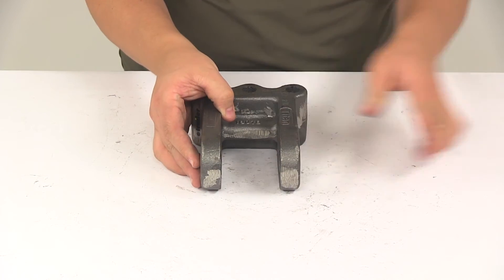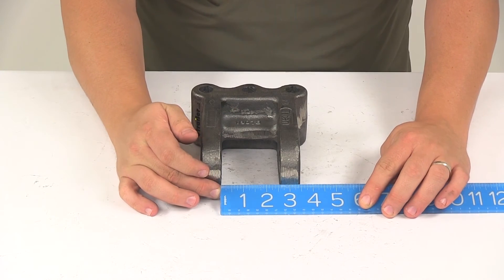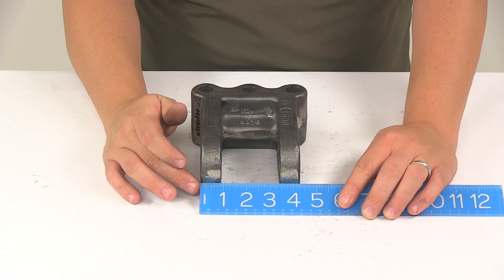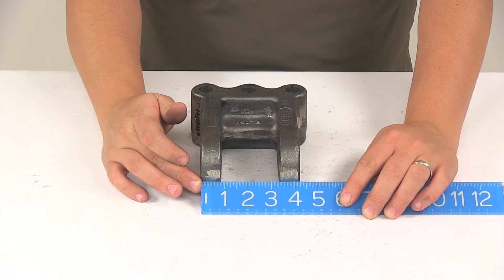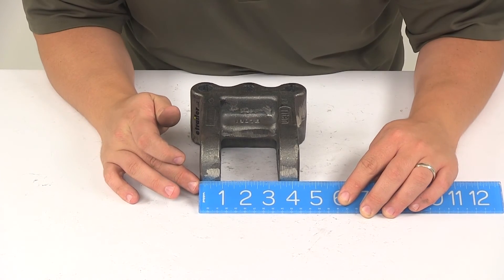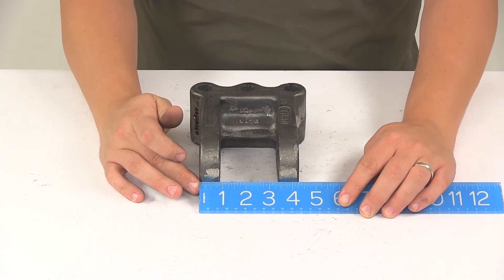The tang separation is going to measure two and a half inches and then from top edge to edge, that's going to give us a measurement of, looks to measure pretty close to four and one quarter inches.